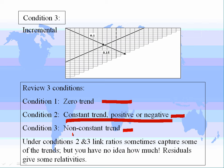Condition 3 says we don't have a constant trend going down the development year, and that's usually a result of the calendar year trends not being the same. So the LOF module will create the bridge to using the Probabilistic Trend Family modeling framework, where you try to identify or build a model for your particular triangle.